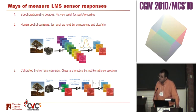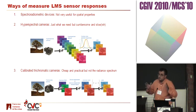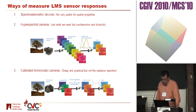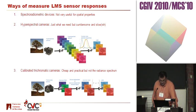Hyperspectral cameras are a bit cumbersome and slow. You need static images, basically, to be able to use them. They are improving, but still not as good as you need.